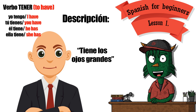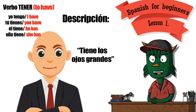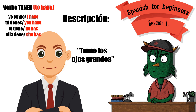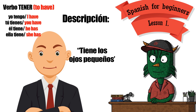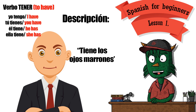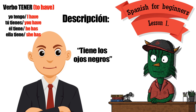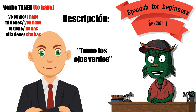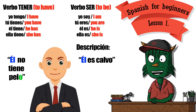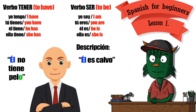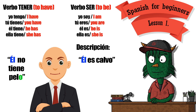Descripción. Él tiene los ojos grandes. I am going to use the verb tener to make a description. Tiene los ojos pequeños — he has small eyes. Tiene los ojos azules. Tiene los ojos marrones. Tiene los ojos negros. Tiene los ojos verdes. I can use the verb tener and the verb ser to make a description. Él no tiene pelo — él es calvo.